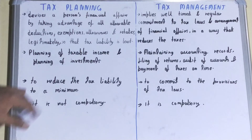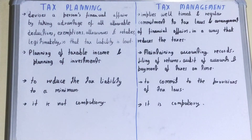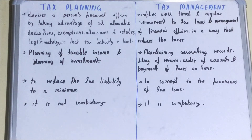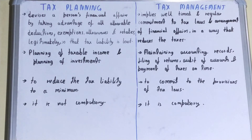Tax planning involves two things: planning of taxable income and planning of investments. So it is like a strategy for managing how income and investments are structured.